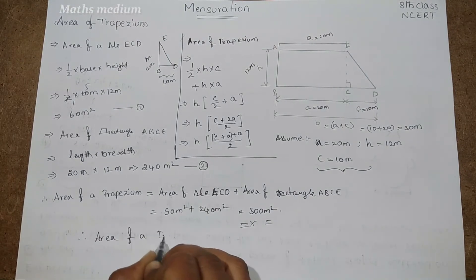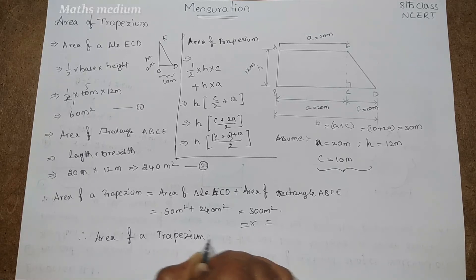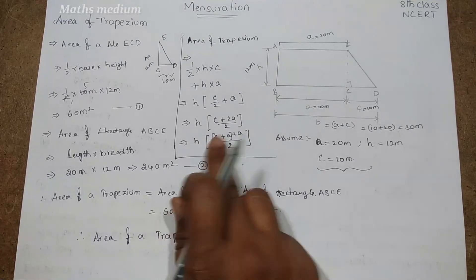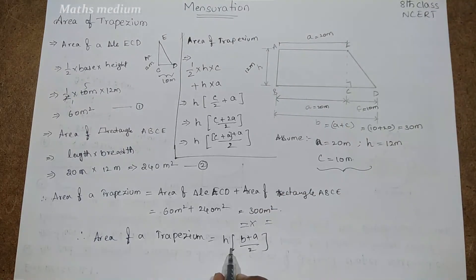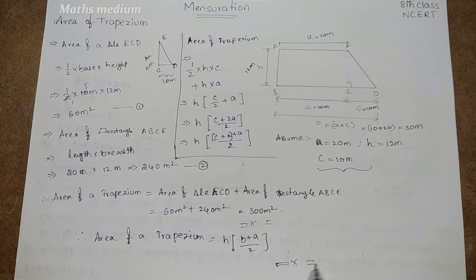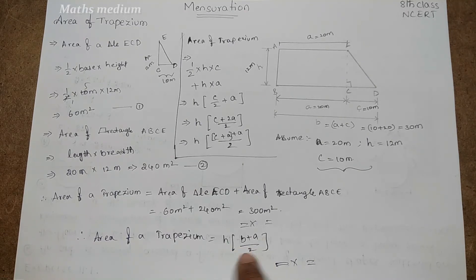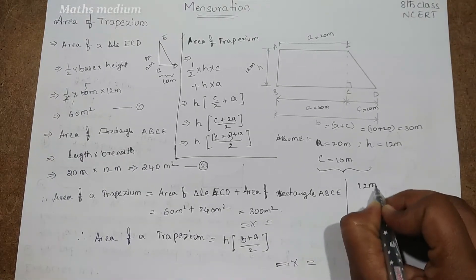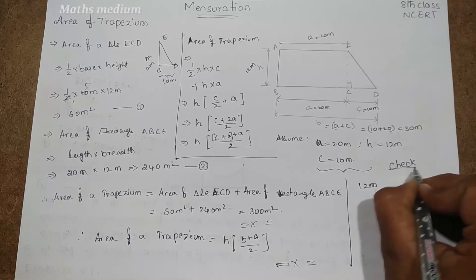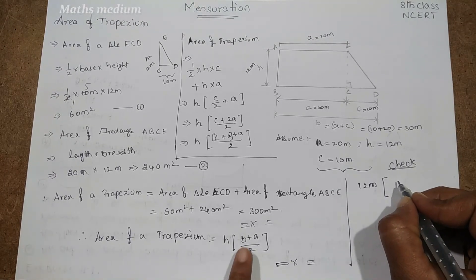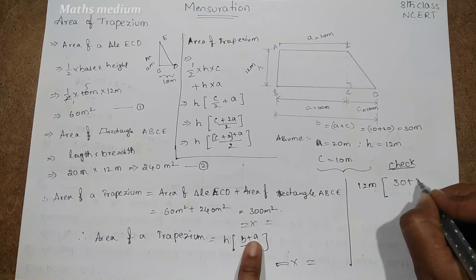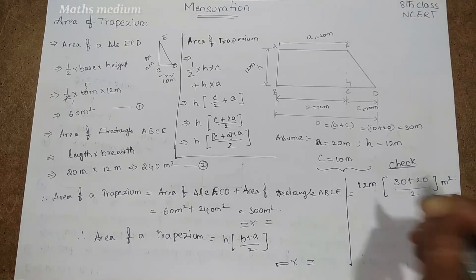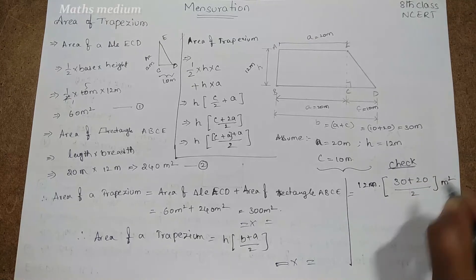Now since c + a = b, we can substitute. Therefore, area of trapezium = h × (b + a) / 2. This is the formula. To verify: h = 12, b = 30, a = 20, so 12 × (30 + 20) / 2 = 300 square meters — same answer.